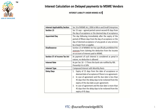If there is no agreement between buyer and seller, then we have to consider 15 days from the day of acceptance or deemed day of acceptance of goods or services as the due date. On the expiry of the 15th day, if payment is made late, the delay days have to be counted and interest has to be paid.